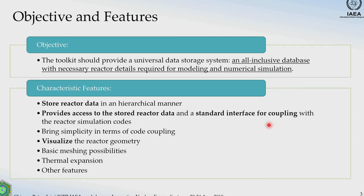The objective is to provide a universal data storage system — an all-inclusive database with necessary reactor details required for modeling and numerical simulations. The features currently developed or to be developed include: storing reactor data in a hierarchical manner; providing access to stored reactor data and a standard interface for coupling with reactor simulation codes; bringing simplicity in code coupling. There is already a module developed for visualization of reactor geometry, which makes it easy for troubleshooting and finding errors in input deck preparation. It also has basic meshing possibilities and can do simple thermal expansion calculations, which are very important for neutronics calculations.